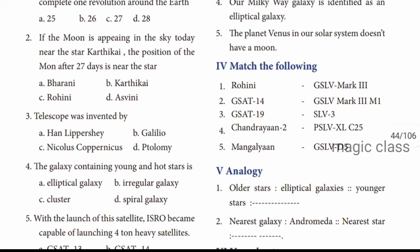Question number 2: If the moon is appearing in the sky today near the star Karthigai, the position of the moon after 27 days near the star is? We already saw that the moon moves from east to west. The stars go in order: first is Aswini, then Barani, then Karthigai. Since the question mentions Karthigai, going back to the original first star, the answer is Option D, Aswini.